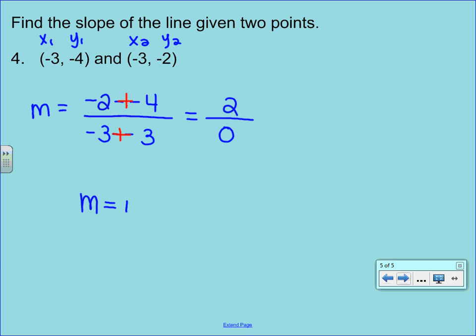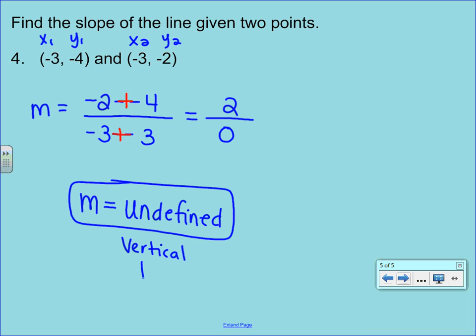If you recall from the previous video, an undefined slope always corresponds to a vertical line. And again, if you were to just quickly plot these points, you would see that they form a vertical line.